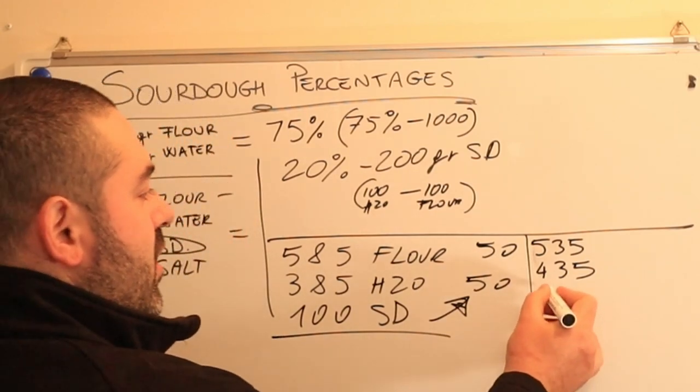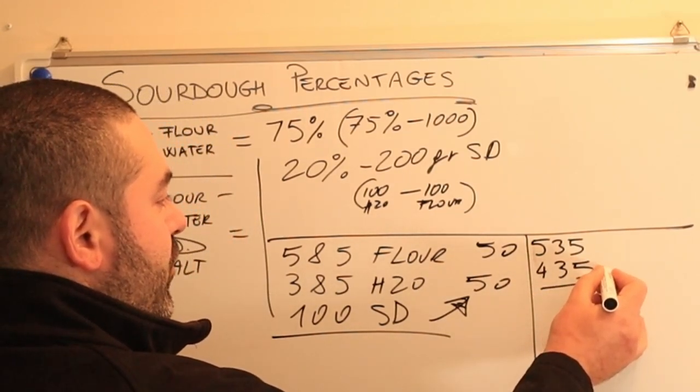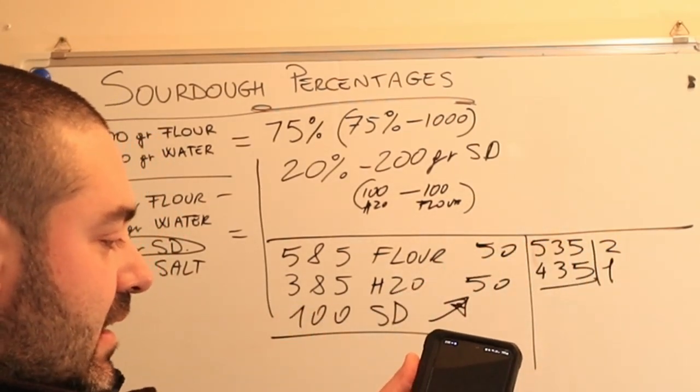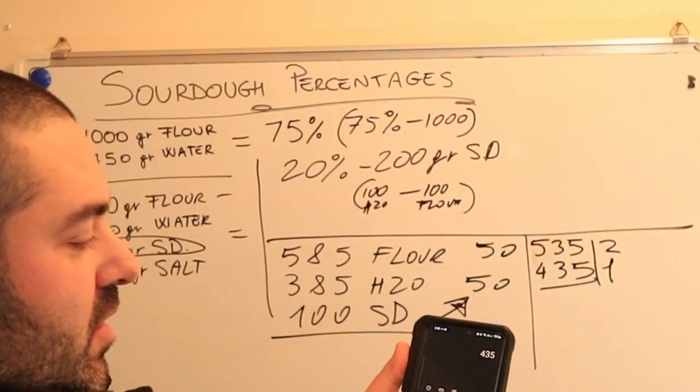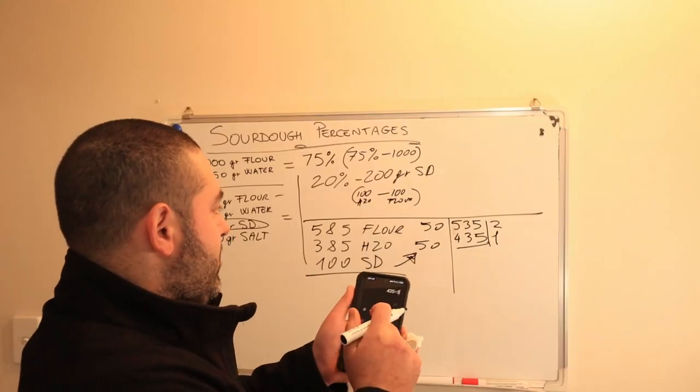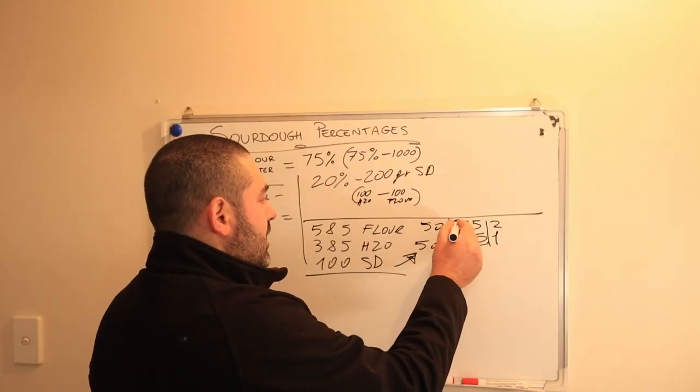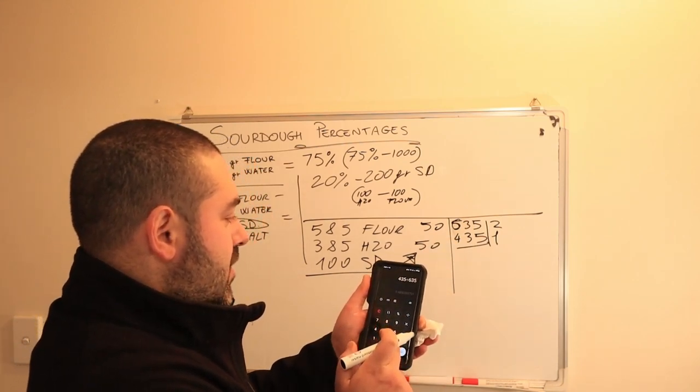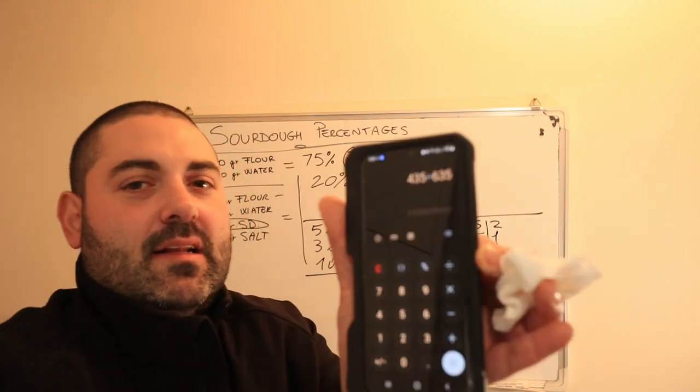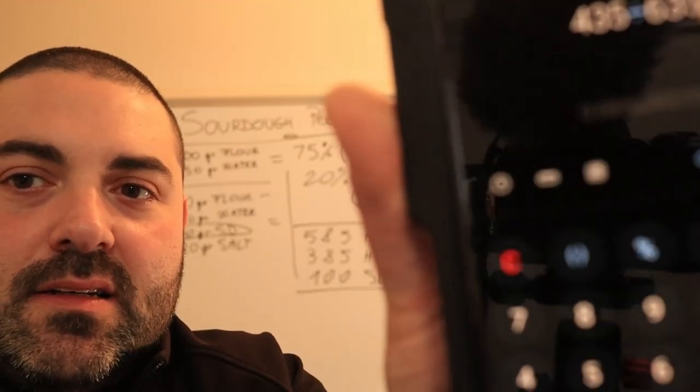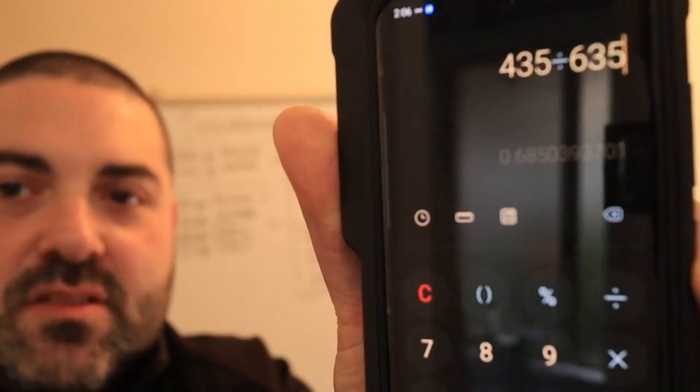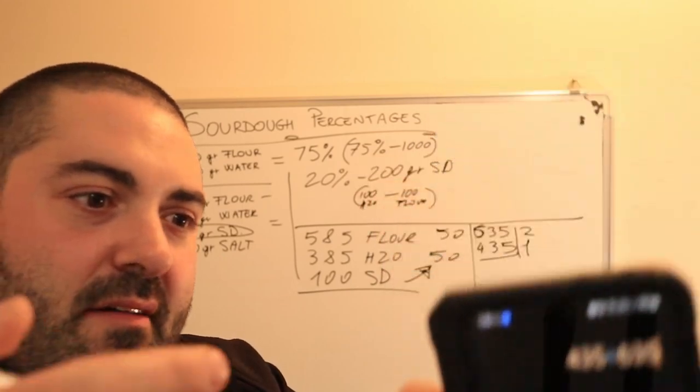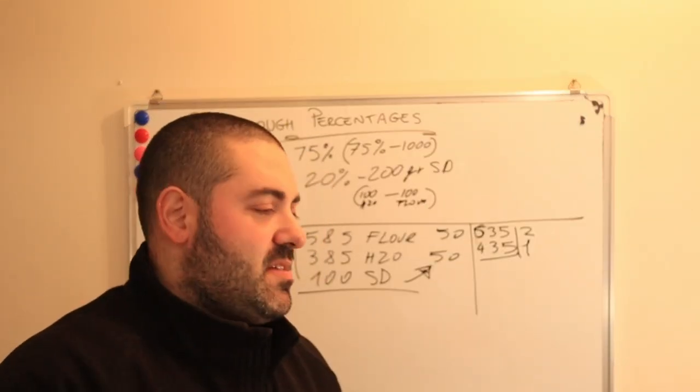So now we're gonna do the same operation. We're gonna account for the water first, and then for the flour. So again, 435 divided by 635 equals 68%. 68% of flour. There you go. There you have your recipe there. There you have the way you can calculate the sourdough percentages. So it's not very difficult once you know how to do it. And in this case, I hope that you understood how this one is done, how this one is calculated.